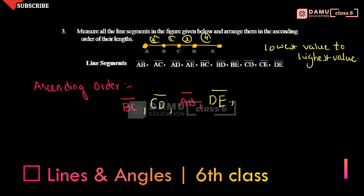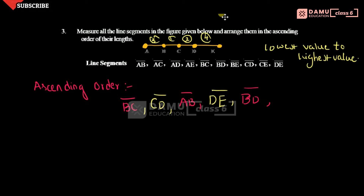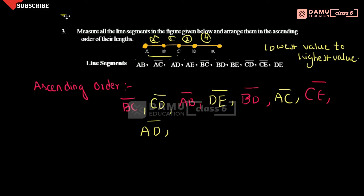After DE, if you combine them, you call it BD — from B to D is smaller. After BD, what you will get is AC, from A to C. Then after AC, you will get CE. Then after that, AD, from A to D. Then BE, from B to E. And finally AE.